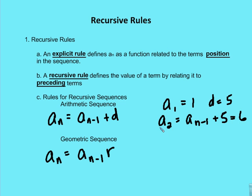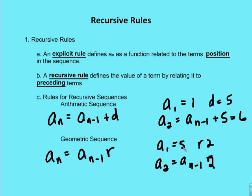In the same way, we can figure out values in geometric sequences using recursive rules. If I know that a sub 1 is equal to 5, and my constant ratio is 2, I can write a rule that says a sub n is equal to a sub n minus 1 times the common ratio of 2. So a sub 2 is 5 times 2, which equals 10. A sub 3 would then be a sub 2, or 10, times the common ratio of 2, and I get 20.